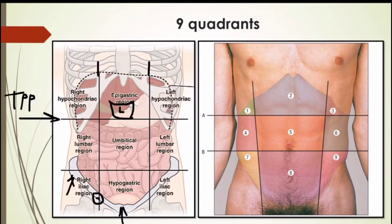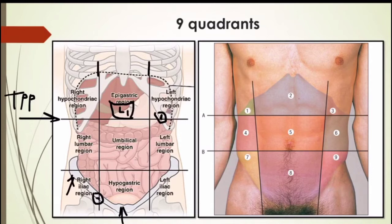The transpyloric plane passes from the lower border of L1 and crosses several structures including the pylorus of the stomach (as the name suggests), the fundus of the gallbladder, the neck of the pancreas, and the hilum of the kidney. If you trace it anteriorly, the plane passes through the tip of the 9th costal cartilage. The lower horizontal line is known as the transtubercular line.